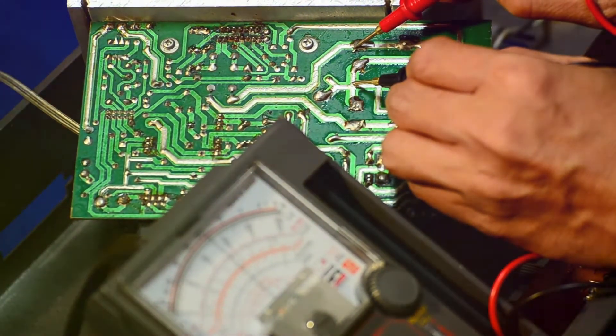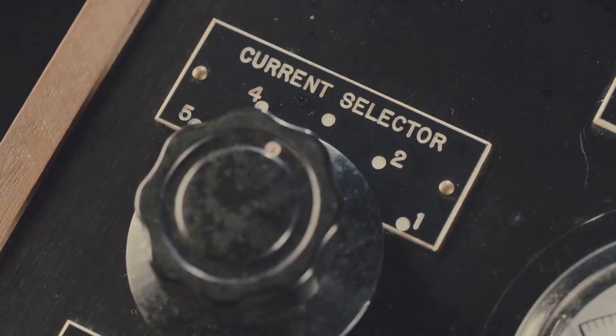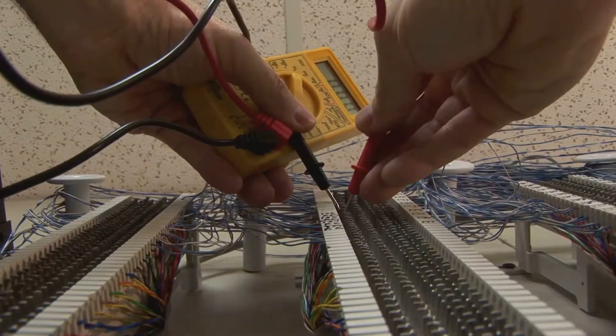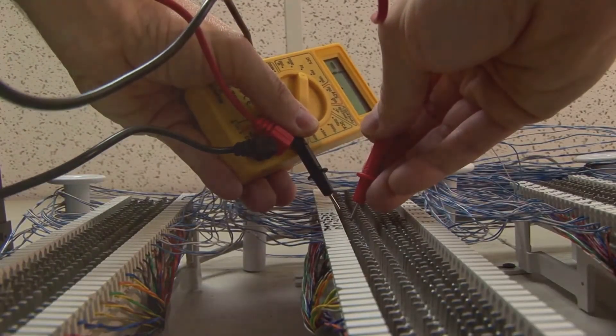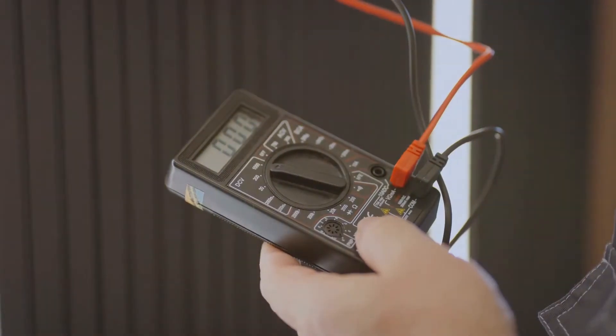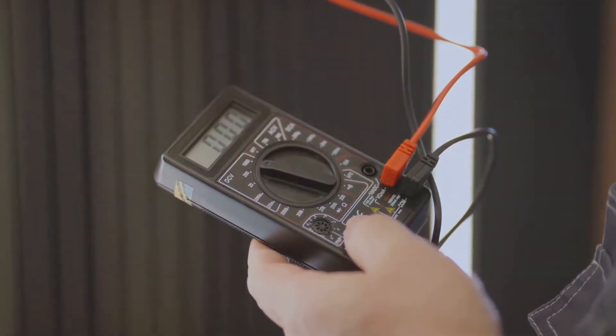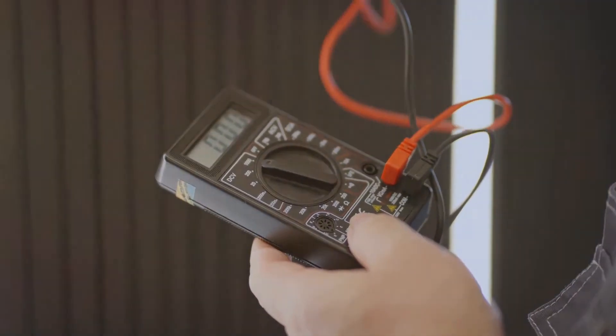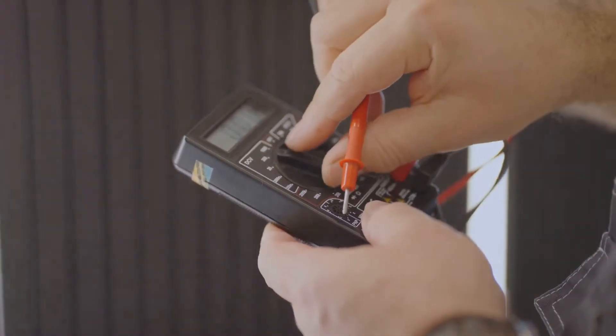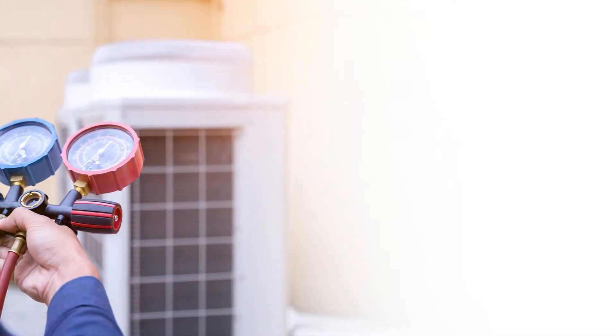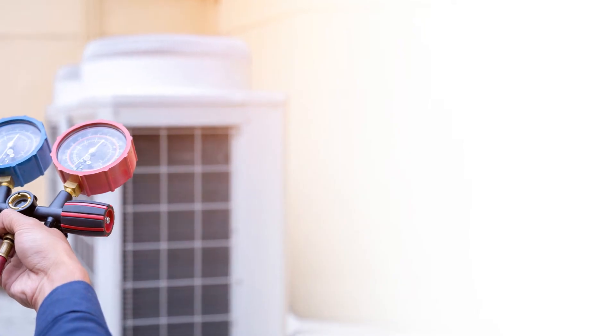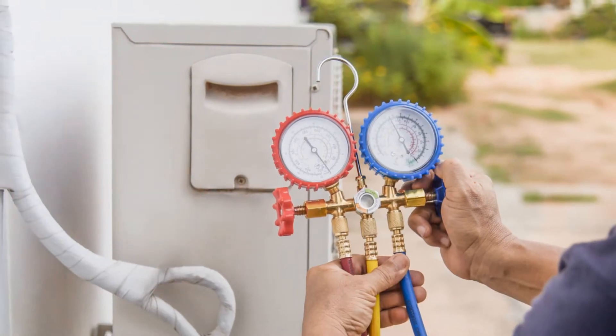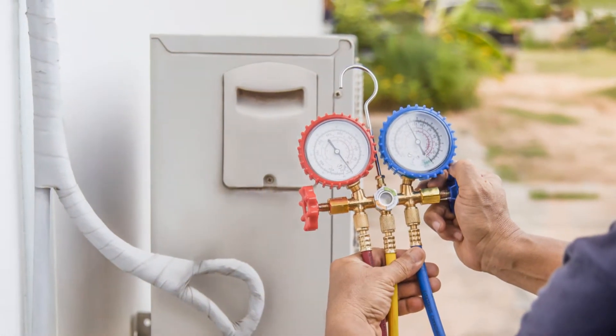Don't worry, we'll explain these terms in more detail later. Using a multimeter is easier than you think. You'll need to select the right setting for what you want to measure, then connect the probes to the circuit or component. The multimeter will display the reading, giving you valuable information about how the circuit is behaving.